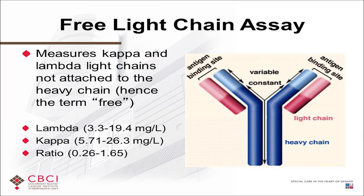The free light chain assay is less important in evaluating WM but is still measured. The immunoglobulin protein has a heavy chain and a light chain — called kappa and lambda. Sometimes they're together, other times the heavy chain and light chain are separated, and you can measure the free light chain when it's not attached to the heavy chain. It's just another piece of the puzzle — you don't base any treatment decisions on just the free light chains or just the IgM; you take it all together.